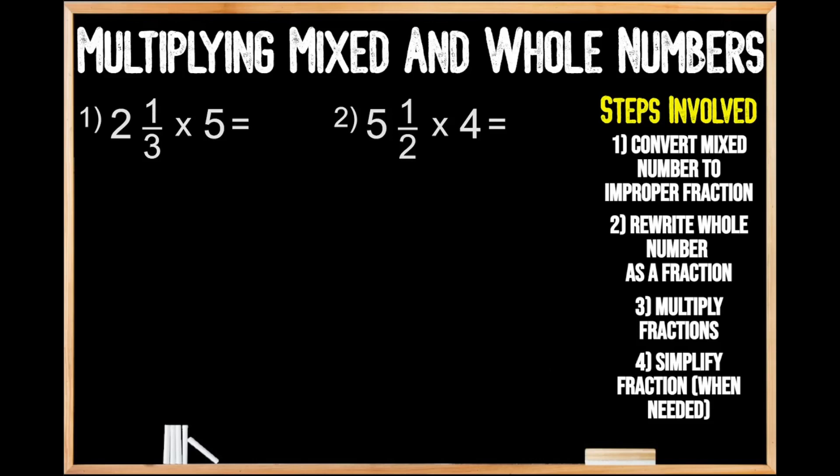Returning back to question number one, we need to convert this mixed number to an improper fraction. First, we're going to multiply the value of our denominator by the value of our whole number. So we're going to multiply three times two, which gives us six. Then we're going to add on the remaining one part for our numerator. When we add six plus one, we get seven — for seven thirds.